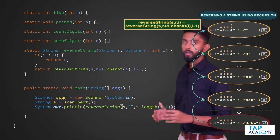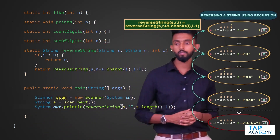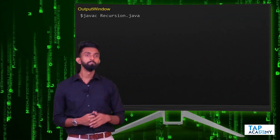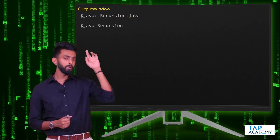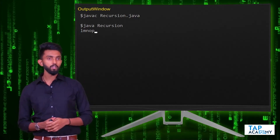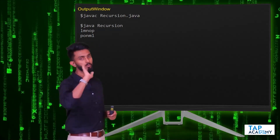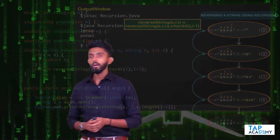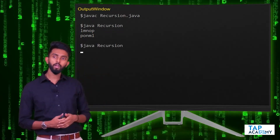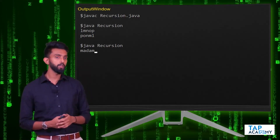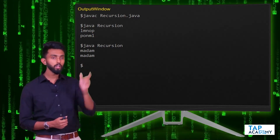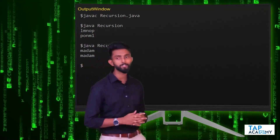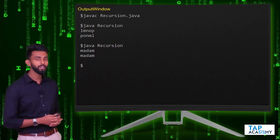Let's execute it. I'll input 'LMNOP' - and the output is 'PONML'. It works perfectly! Let me re-execute and this time input 'MADAM'. The output is 'MADAM' - same as the input. Can anyone tell me why?